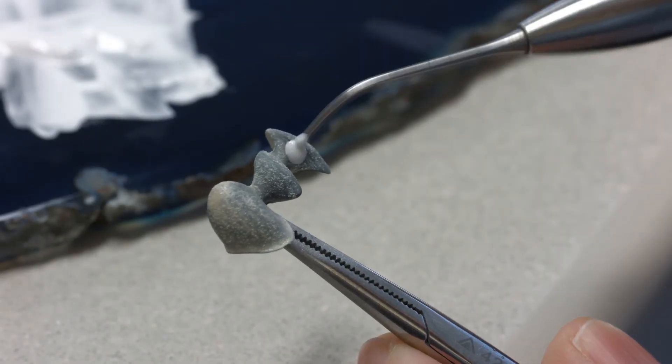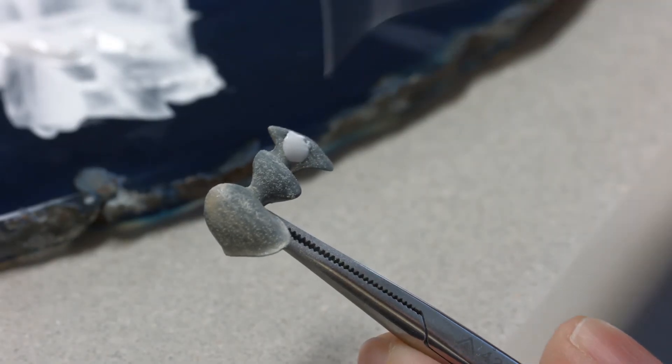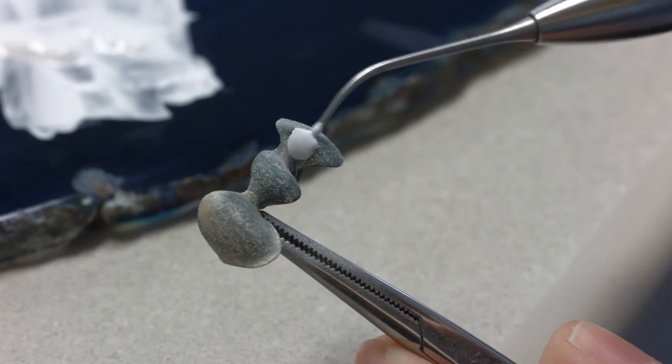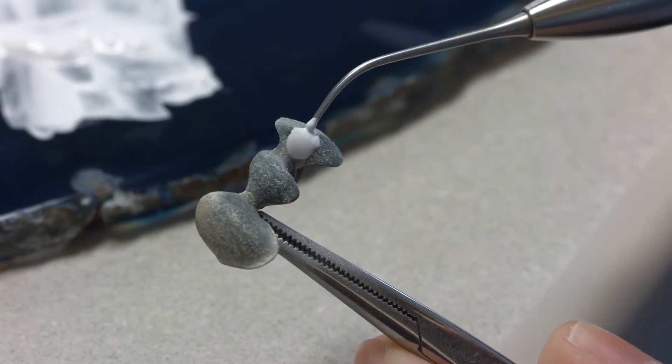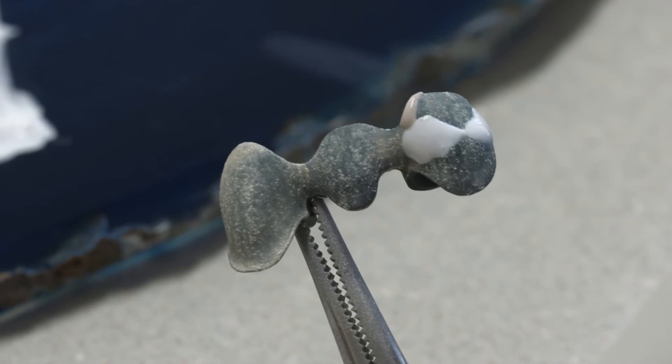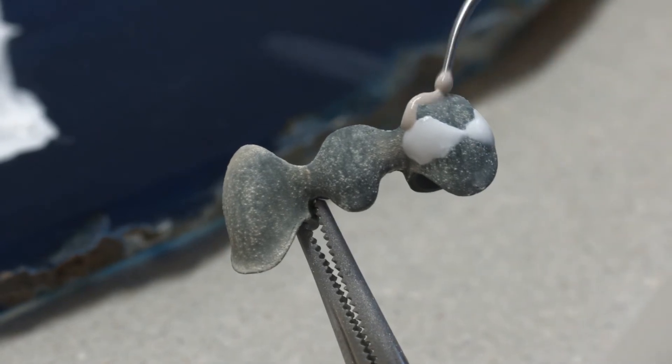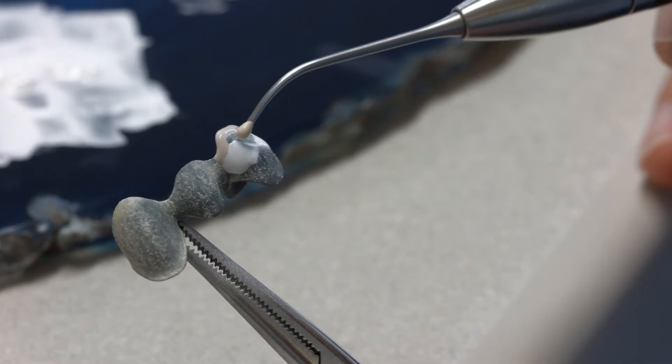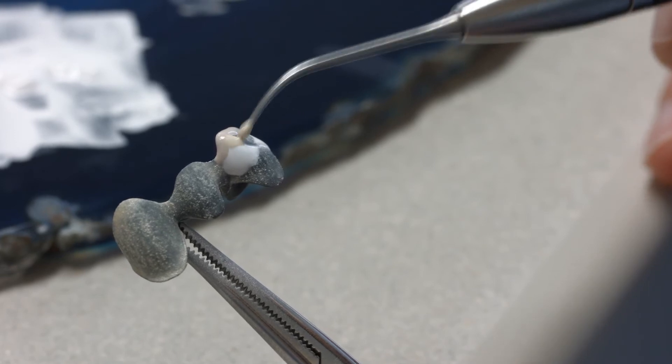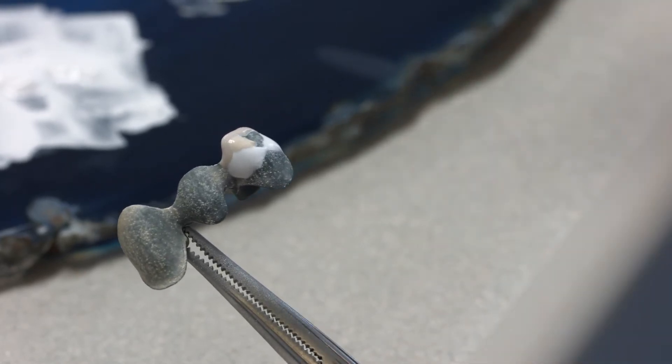Apply IPS-style Ceram Powder Opaquer in an even and uniform layer. Leave out areas in which IPS-style Ceram Intensive Powder Opaquer will be applied at a later stage, for example, cervical, incisal, occlusal and palatal areas.